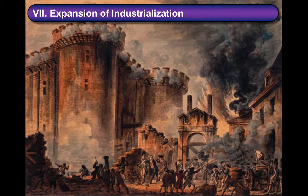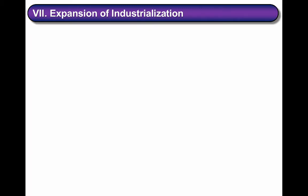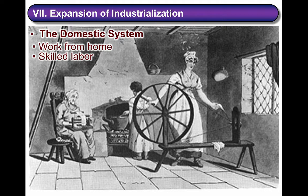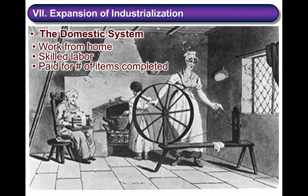To understand how this time period was truly revolutionary, we have to look at how the social order was uprooted. For millennia, most industry was aligned according to the domestic system. People typically worked from their homes and production was done through skilled labor, often with a master craftsman taking on an apprentice for years. They also organized into guilds for economic protection, and people were paid for the number of items they completed.